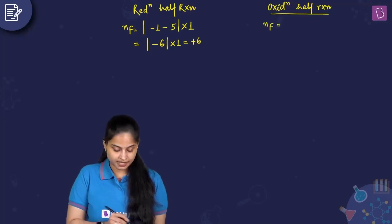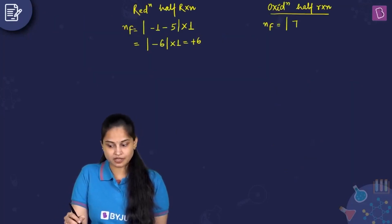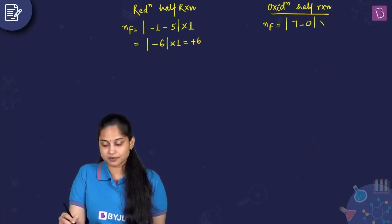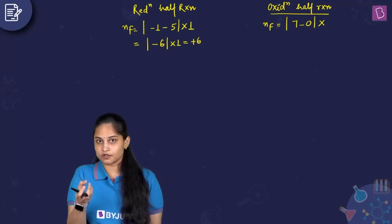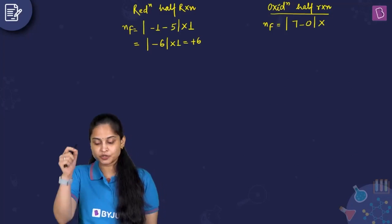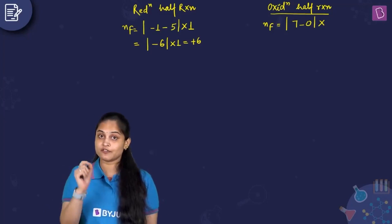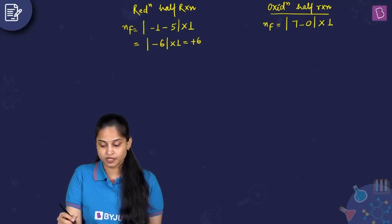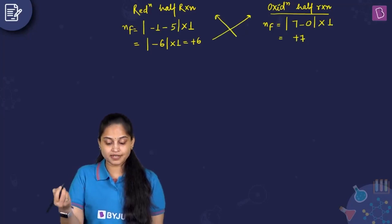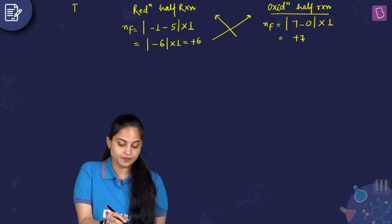For the oxidation half reaction, the n-factor for manganese: |+7 − 0| × 1 = 7. Now cross-multiplying the n-factors: the reduction half reaction is IO₃⁻ → I⁻ with n-factor 6, and the oxidation half reaction is Mn → MnO₄⁻ with n-factor 7. So we write 7 IO₃⁻ and 6 Mn atoms.